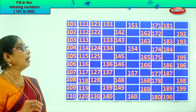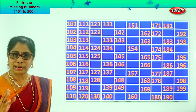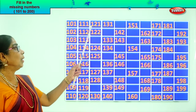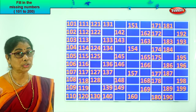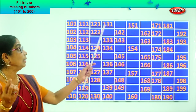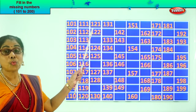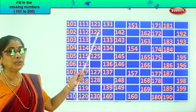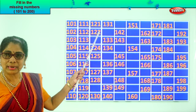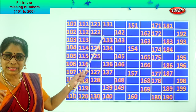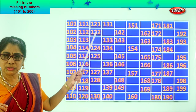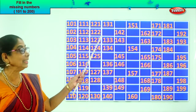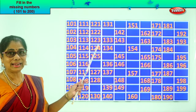Now after 120, what comes? 21 — yes, 121. After 21, 1 is there, next will be 2, so 122. Now we have 22 here. What will be the next number? After 2 comes 3. After 22, what can be the number? 23. So we write it as 123.